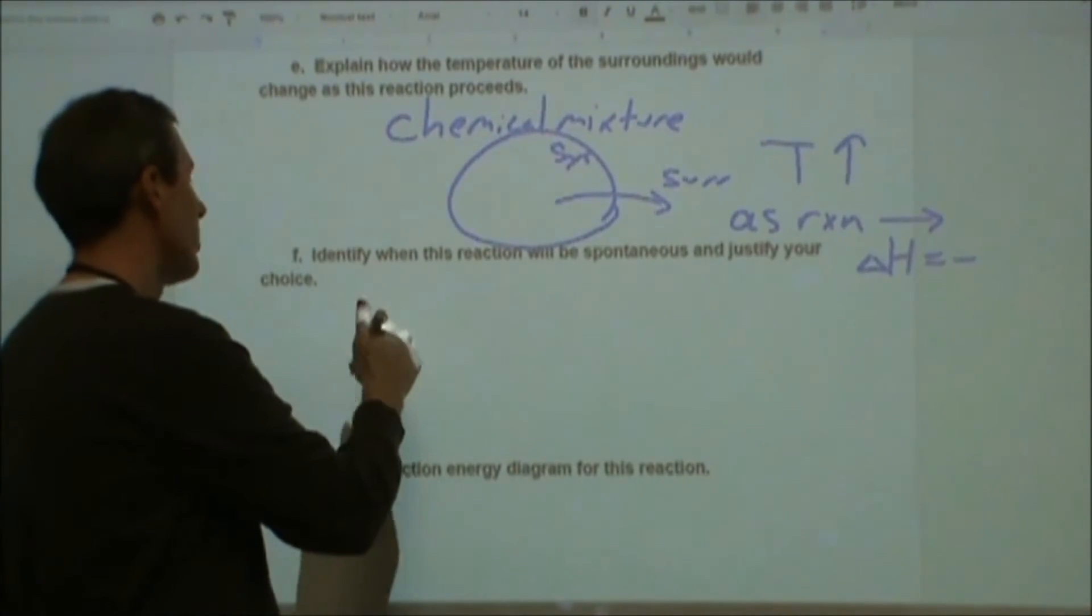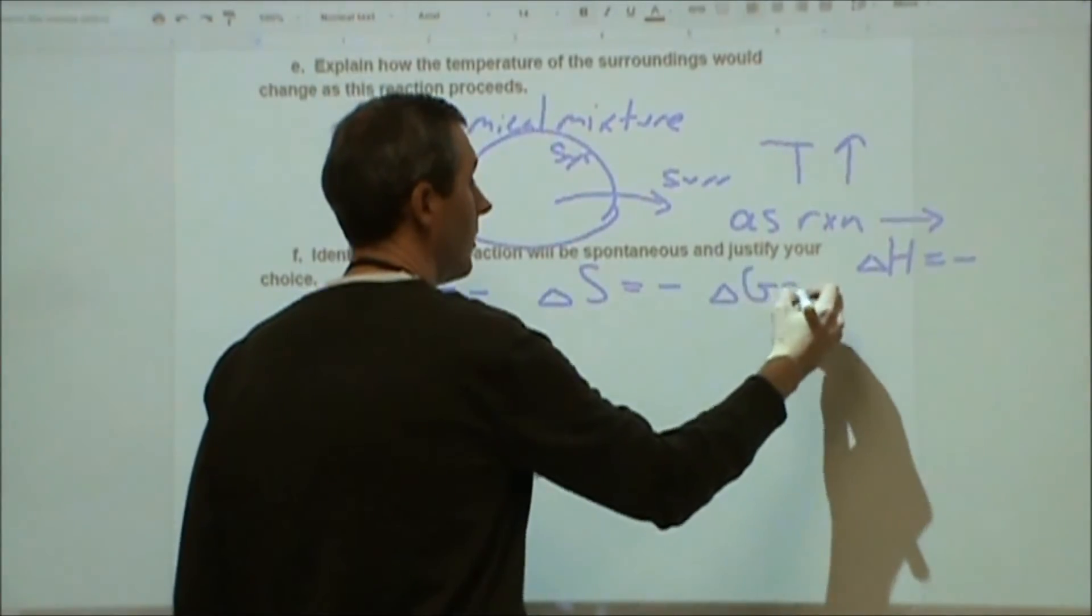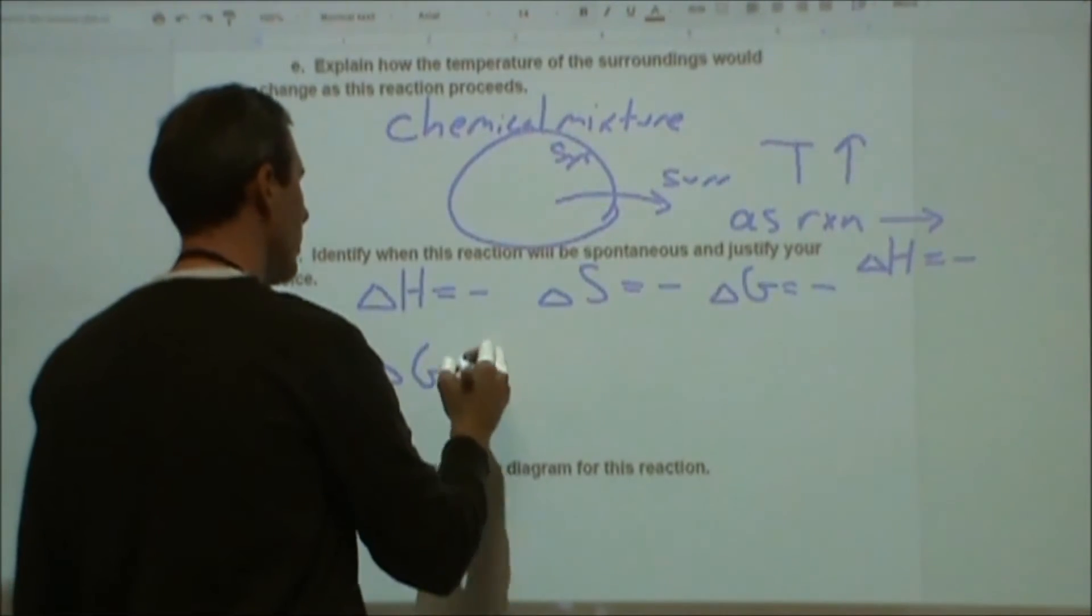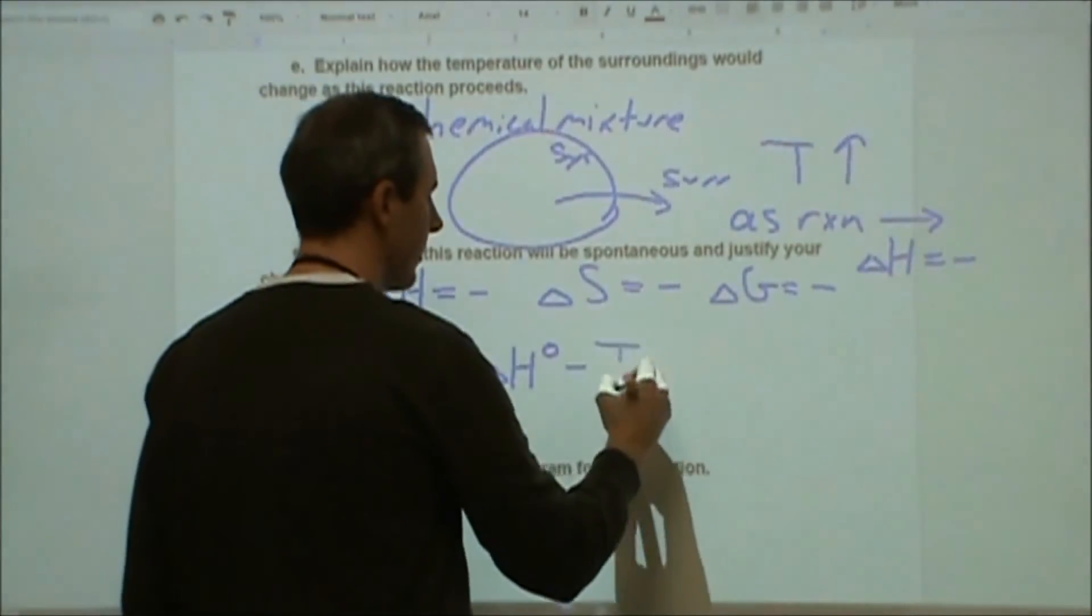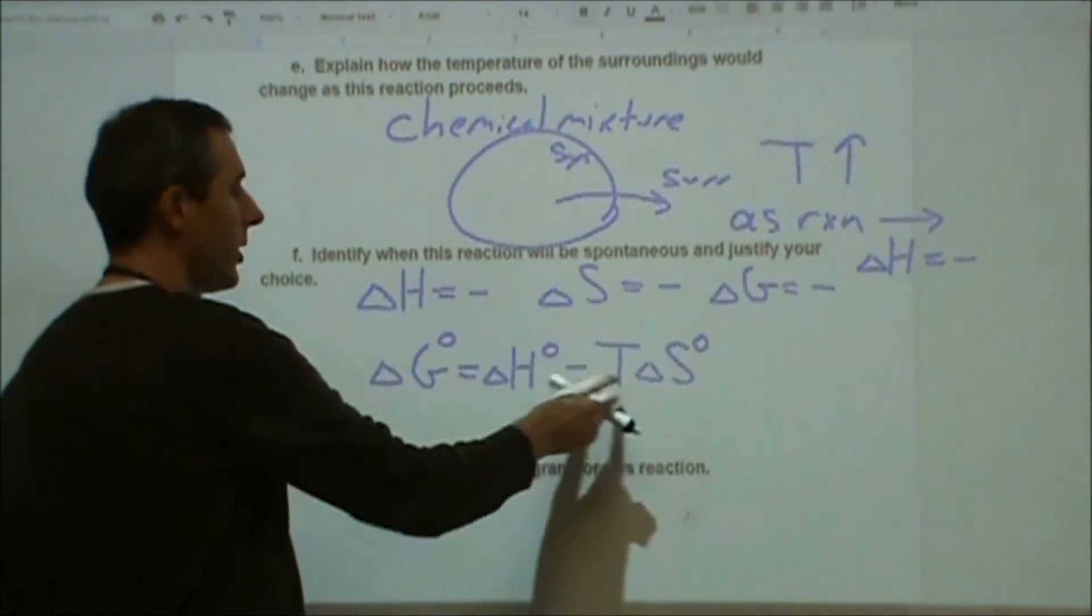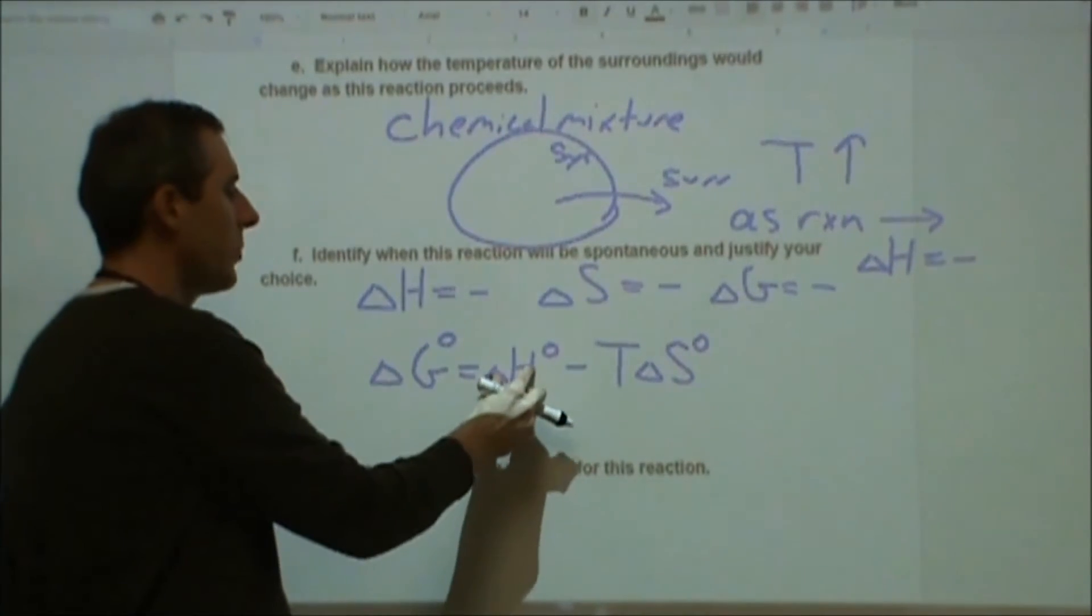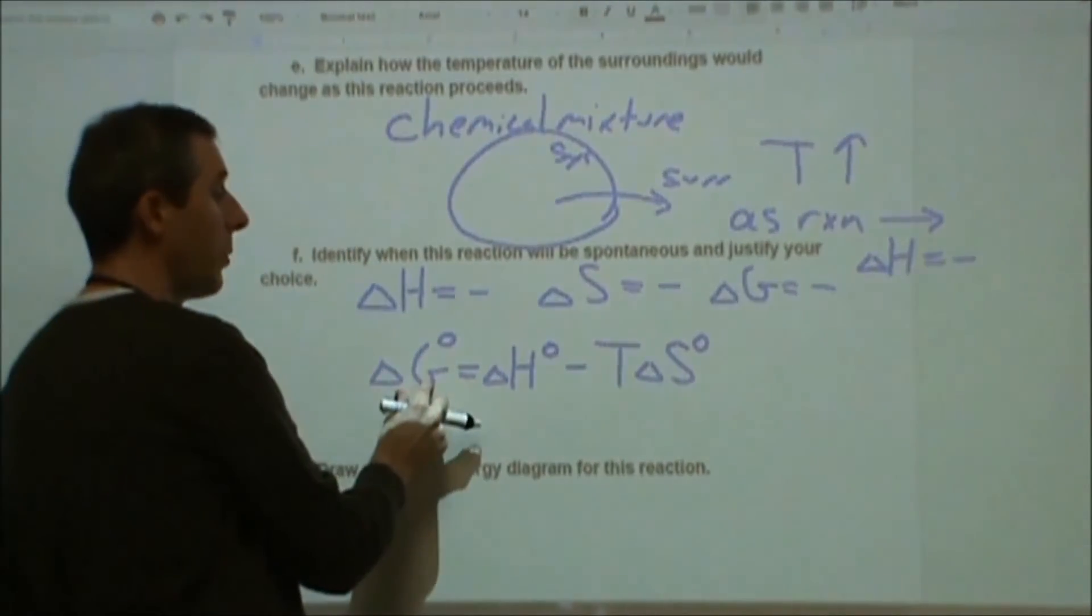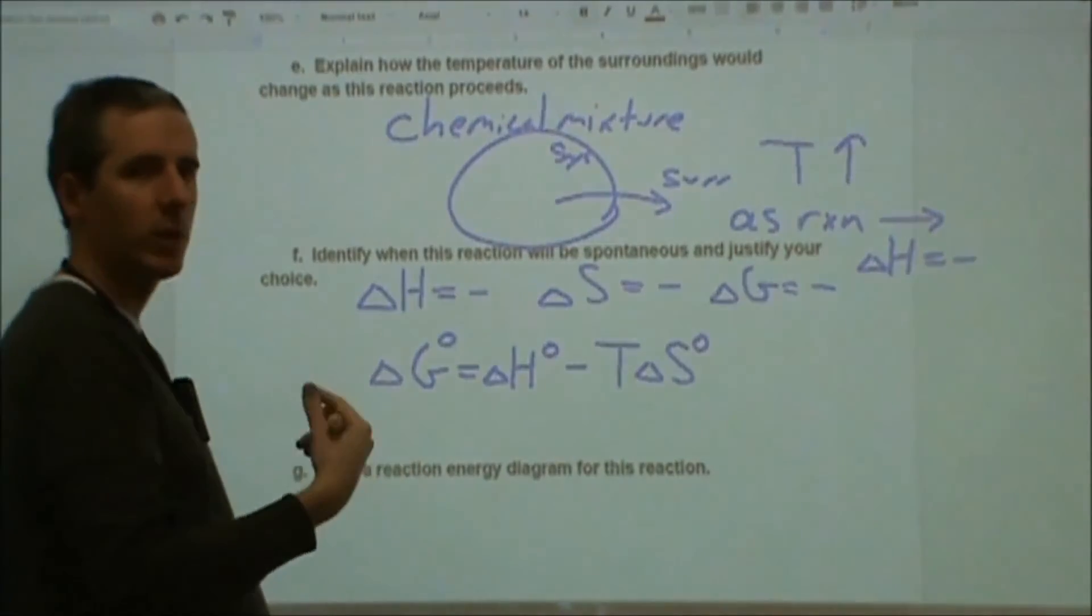Then in part F, identify when this reaction will be spontaneous and justify your choice. So we know that it's spontaneous as is. At 298 Kelvin we know all these to be true. However, we also know that delta G is going to change assuming that the enthalpy change and entropy changes are relatively constant. As temperature changes, that's going to create a larger and larger impact from the entropy change on Gibbs free energy. The fact that this is negative means that delta G will be negative because of that alone. So delta H being negative gives us a negative delta G quantity. Delta S being negative however, because that's subtracted, that's going to cause this to be more positive. So as T becomes larger, that's going to carry more weight for this influence. Eventually this is going to cross over from being negative to positive.